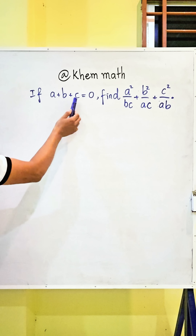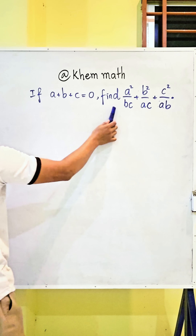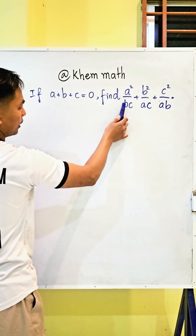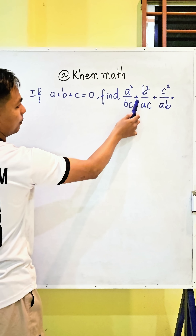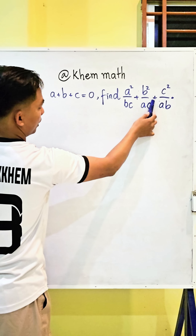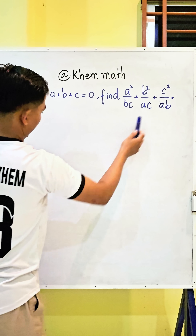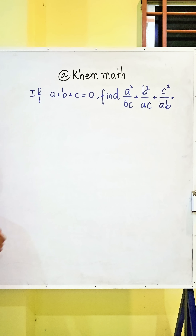If a plus b plus c equals zero, find the values of a squared divided by bc, plus b squared divided by ac, plus c squared divided by ab. First, we use this equation.